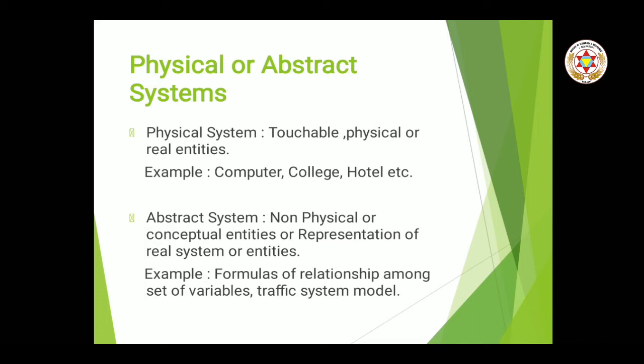Abstract system hota hai jo physically present nahi hota, lekin kisi real-world entity ko represent karta hai. Jaise ki aapka traffic system — wahan red light automatically hoti hai, green light hoti hai, yellow light hoti hai. Toh wahan aapne ek simulation lagaya hua hai, kuch formulas banaye hain, programming banayi hui hai jo represent kar rahi hai aapke traffic system ko. Ya phir mathematics ki equation hai — x plus y equal to something, a² + b² — jahan x aur y variables kuch values represent kar rahe hain. That is your abstract system.